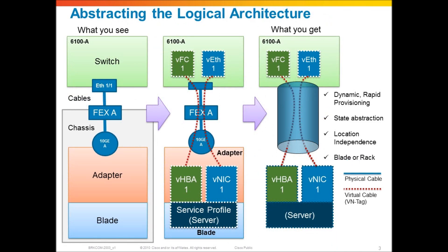In the first video we talked about the physical architecture of UCS — what you actually see and what you're actually hooking up when you're initially implementing the system. You've got the fabric interconnect switch with the switch ports and the cables going to the chassis. Each chassis has traces to an adapter and the blades. That's the physical architecture, and as discussed, UCS provides virtualization capabilities at all levels: switches, cables, adapters, and servers.